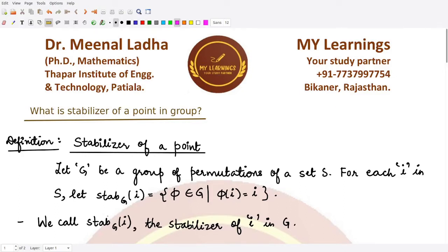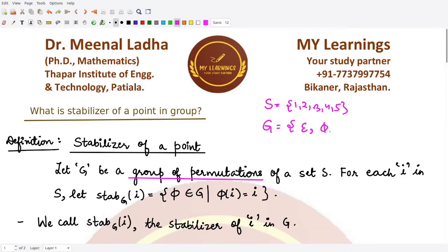For the stabilizer of a point, we consider some group G which is a group of permutations. Suppose we have some set S with elements 1, 2, 3, 4, 5. On these five elements we can create a group G consisting of different functions — the identity function, and permutations like (5 1), (5 2), (5 3), and so on. These are mappings of all elements to themselves, and we have this group under the operation of composition.